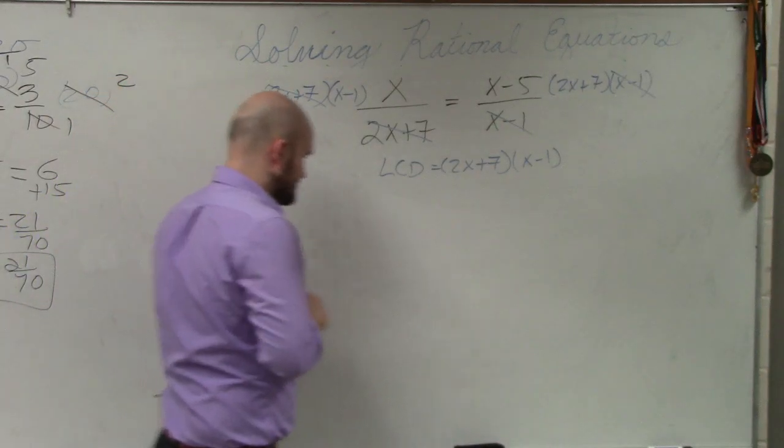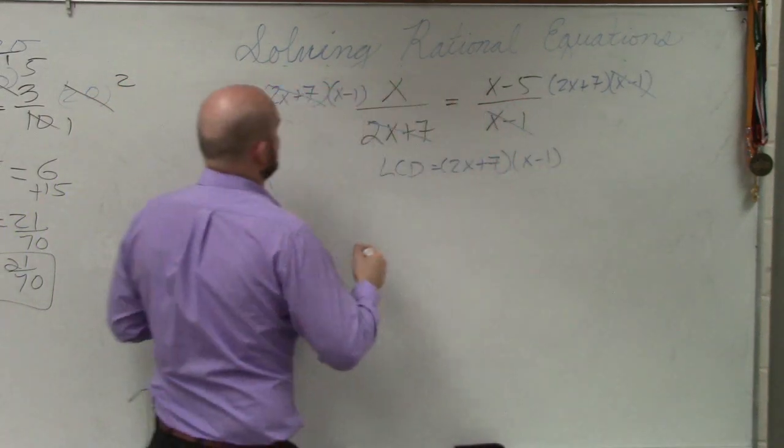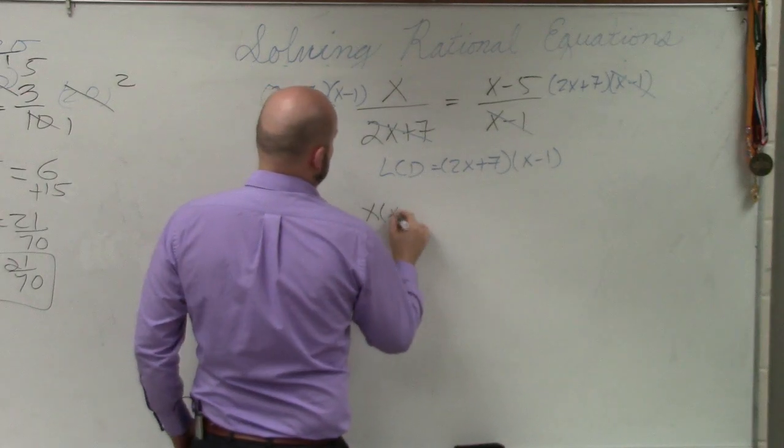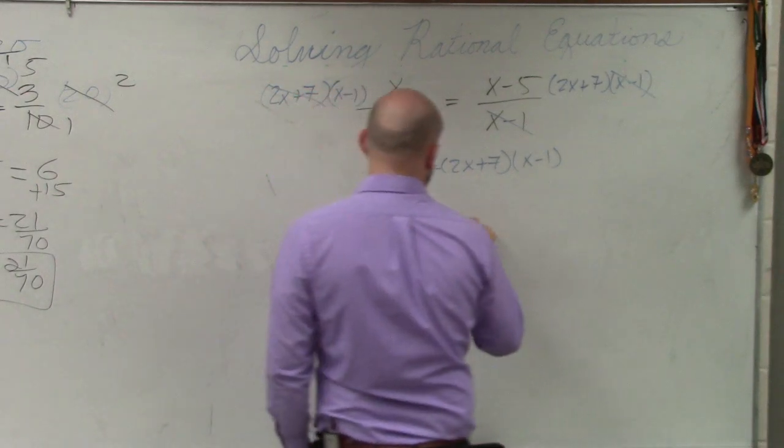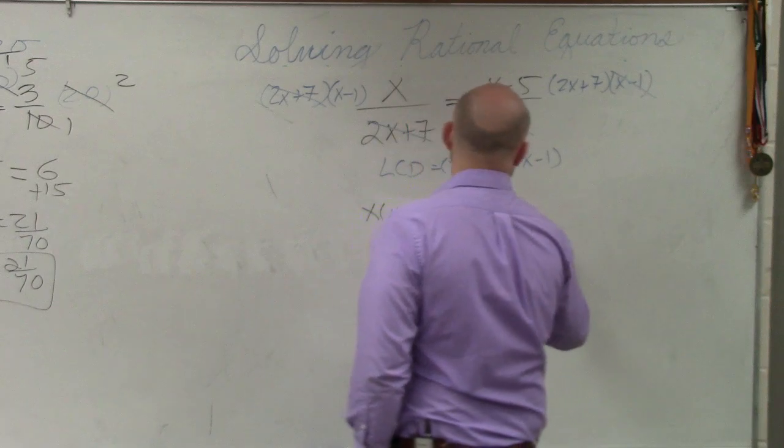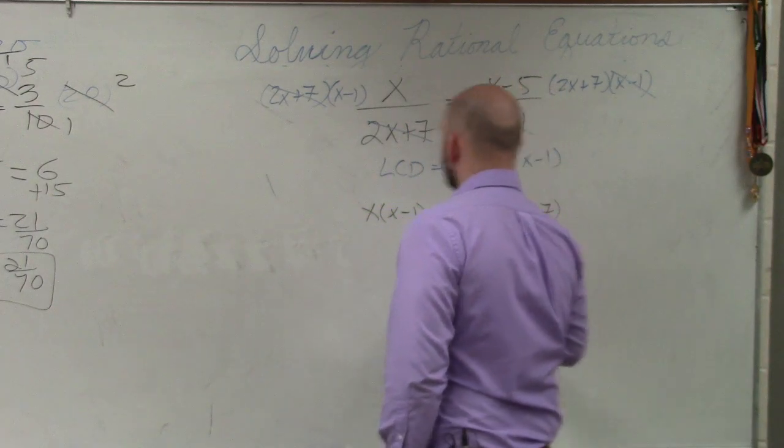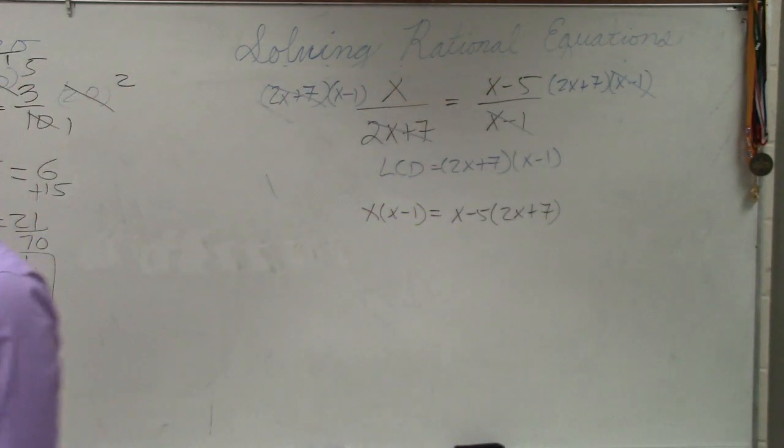So now, excuse me, now I'm left with the equation x times x minus 1 is equal to x minus 5 times 2x plus 7. Does everybody see how I got that?